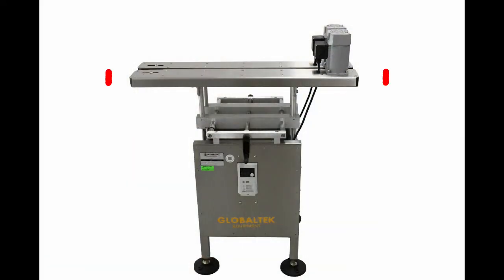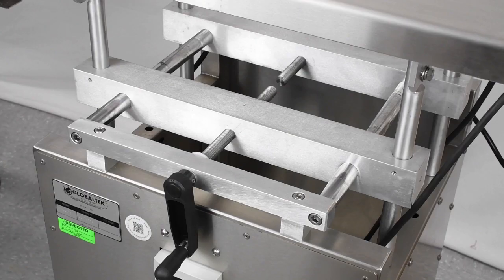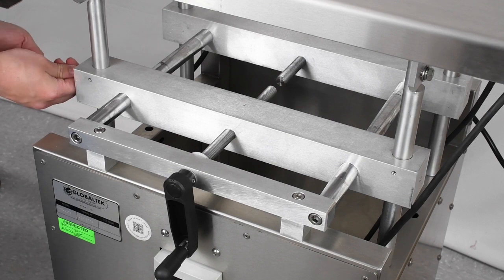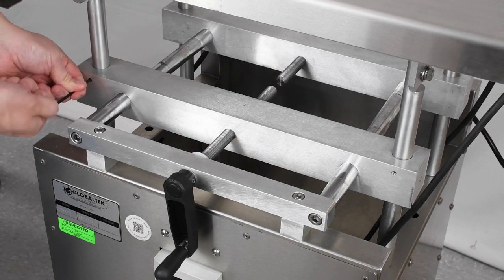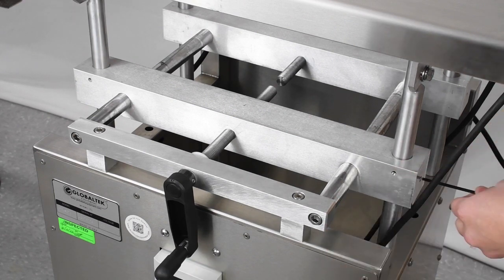We will now adjust the height of our belt cassettes to better match with our inline conveyor. To begin, loosen the four set screws fastening the cassette mounting bars to the frame using a one-eighth hex key. The two set screws that hold each mounting bar are set at 90-degree angles from one another.